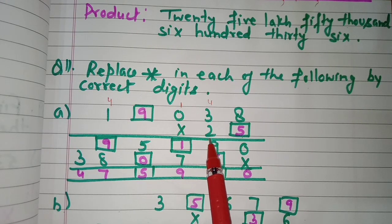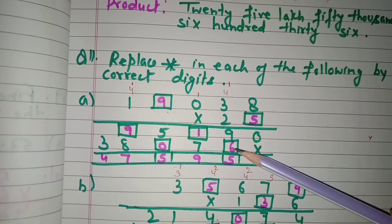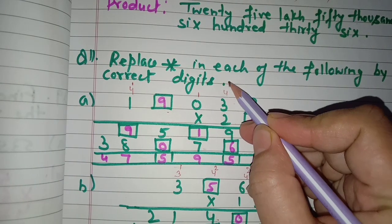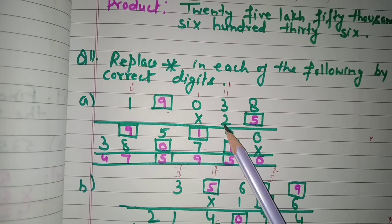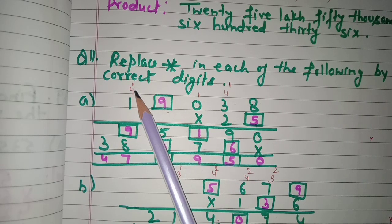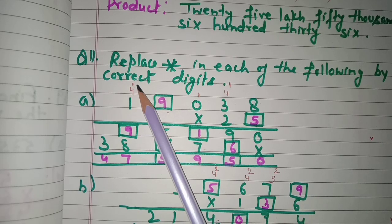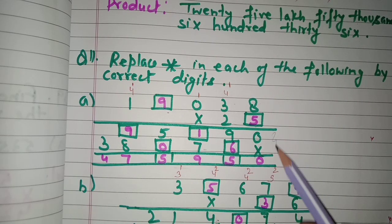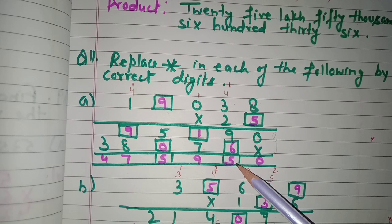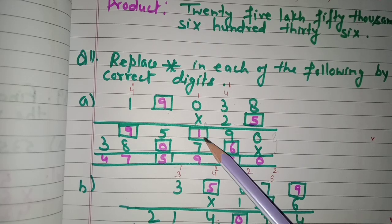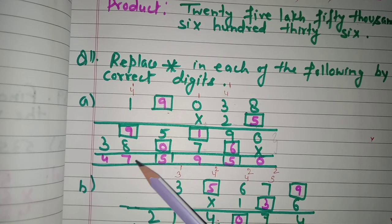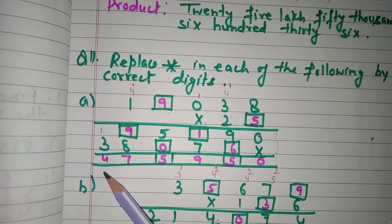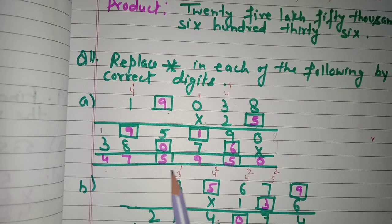For the tens place digit two: two eights are 16 — write six, carry one. Two threes are six plus one carry is seven. Two zeros are zero. Two nines are 18 — carry one. Two ones are two plus one carry is three. Adding the partial products: the answer is four lakh seventy-five thousand nine hundred fifty.